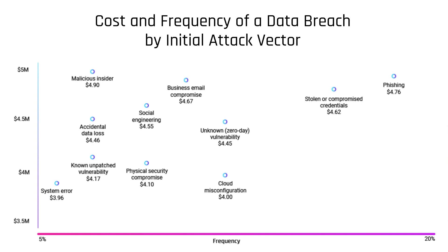Unknown zero days are what nation states and hackers consider gold, and they've been on the rise — from 15 total known zero days in 2022 to 100 in 2023. They're not just targeting big brands; it's very widespread. China went from having only a few zero days historically to 12 last year, becoming leaders in creating them. When you have a zero day, you stay quiet, steal data unnoticed, and maintain access.